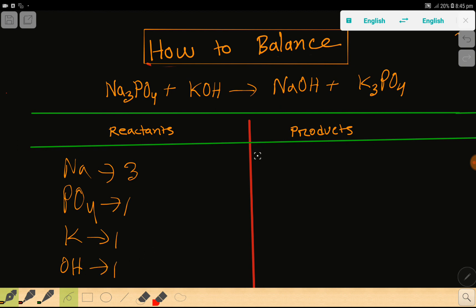In the right hand side we have sodium 1. Then we have OH that is hydroxide. OH is a polyatomic ion. Then we have potassium which is 3. Then we have phosphate which is 1.